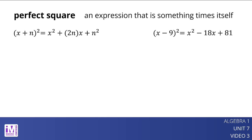Quadratic equations that are in the form of a perfect square equal to a perfect square can be solved in a straightforward manner. Here is an example: x squared minus 18x plus 81 equals 25. The equation now says squaring x minus 9 gives 25 as a result. This means x minus 9 must be 5 or negative 5.